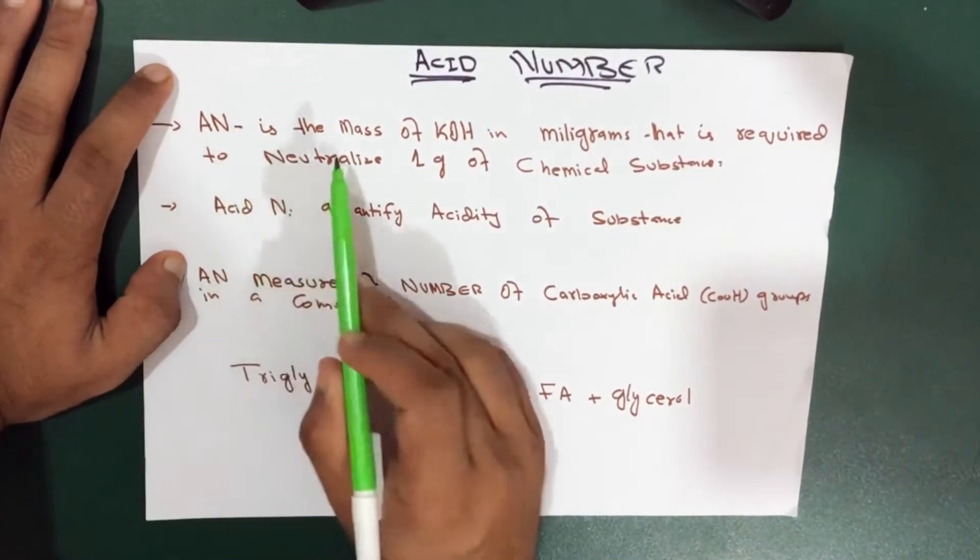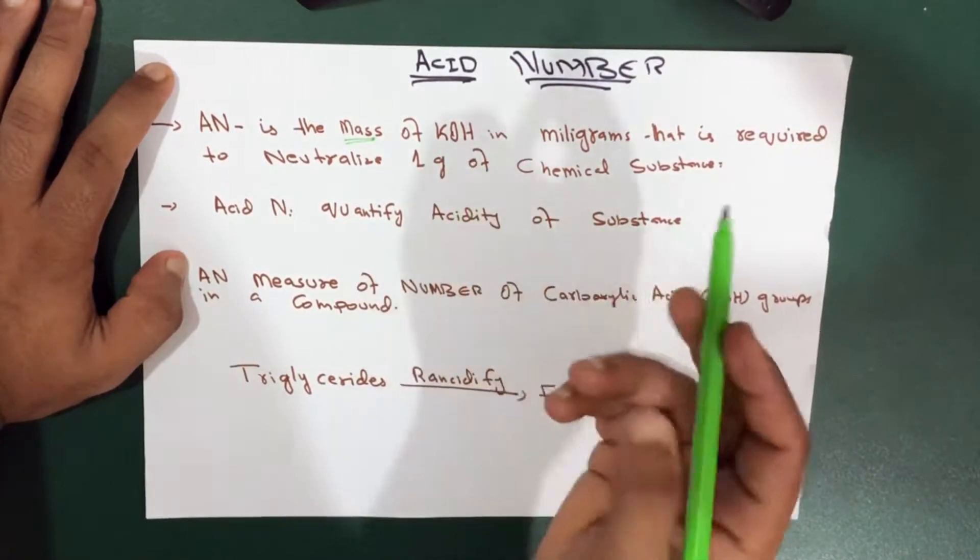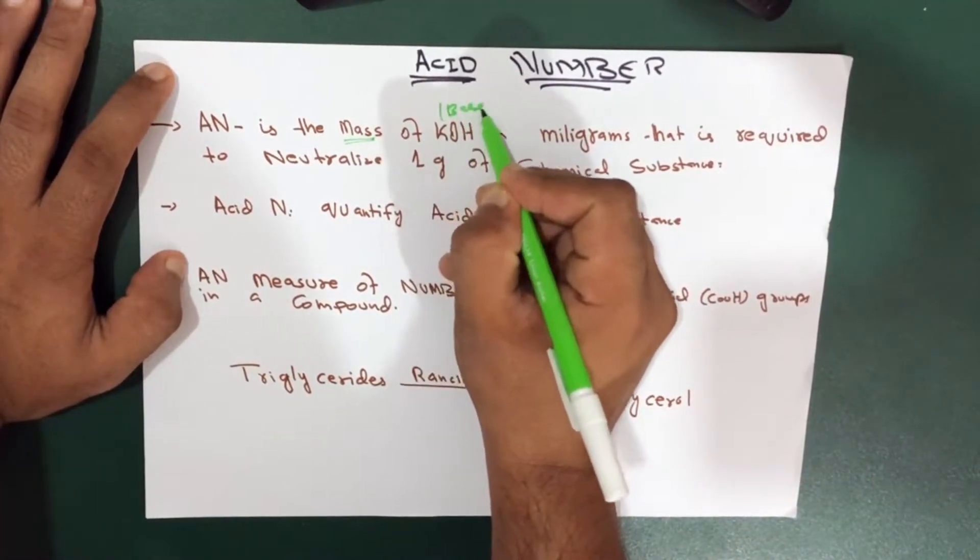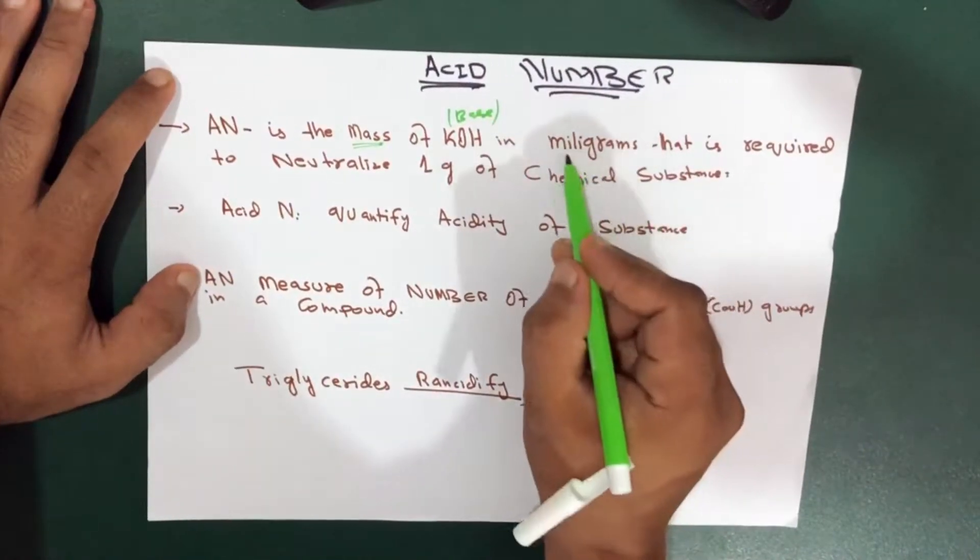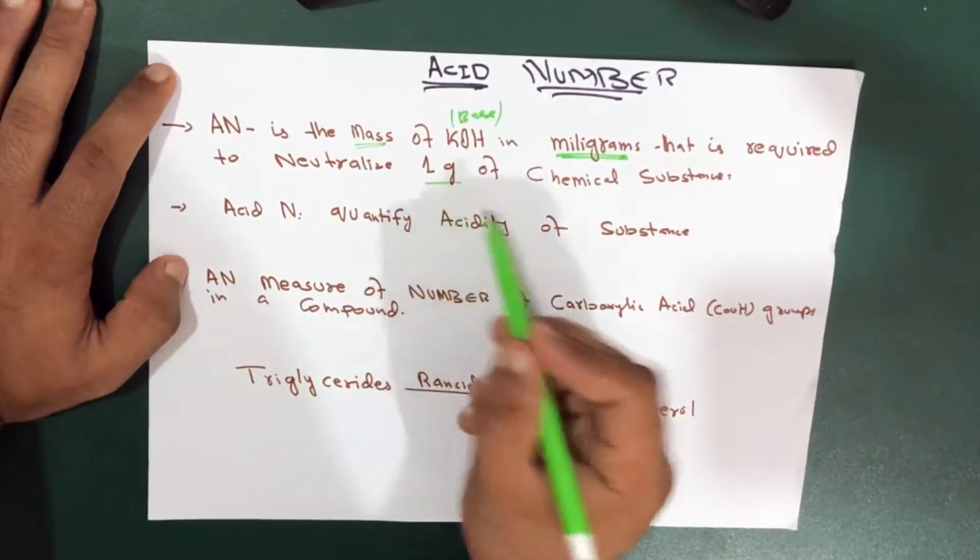So acid number is the mass of potassium hydroxide, which is actually a base, in milligrams, that is required to neutralize one gram of chemical substance.